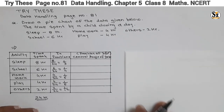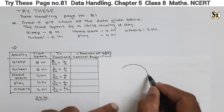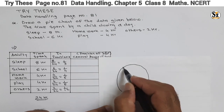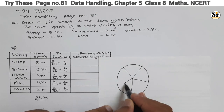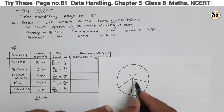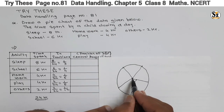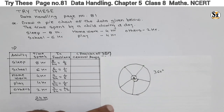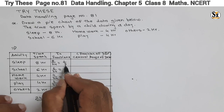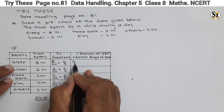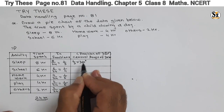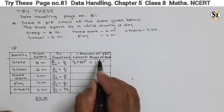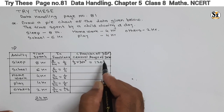If the circle is a whole with 360 degrees at the center, it is divided into sectors representing each piece of information. Each sector has a degree that is a fraction of 360 degrees. For sleep, the fraction is one third, so: one third into 360 degrees equals 120 degrees. So the sleep sector will have a central angle of 120 degrees.